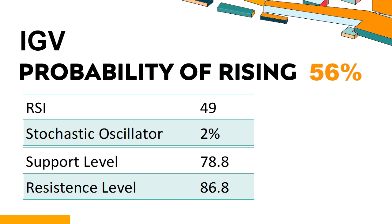The probability of IGV share price rising is 56%, meaning the stock has a higher chance of rising. Combining multiple technical analysis indicators, IGV has three bullish signals and four bearish signals. IGV's short-term support level is 80.4; if it falls below 80.4, it will have a chance to test 78.8. The short-term resistance level is 84.7; if it breaks through 84.7, it will look up to 86.8.